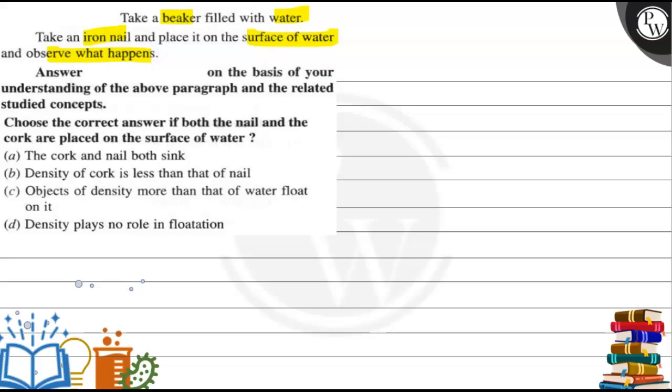On the basis of your understanding of the above paragraph and the related studied concept, choose the correct answer. If both the nail and the cork are placed on the surface of water. Ab aapko batana hai ki agar dhono nail aur cork ko water ke surface per rakh diya jayai, toh kya hooga?